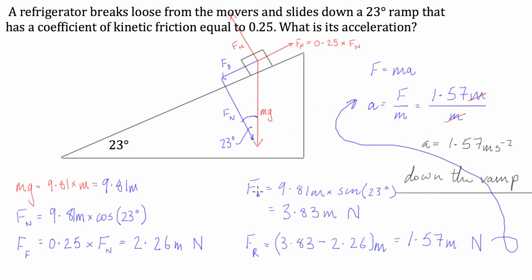That was a quick example of how we can get a resultant acceleration of an object on an inclined plane, which also considers a coefficient of kinetic friction. I hope the video helped, and I'll see you next time.